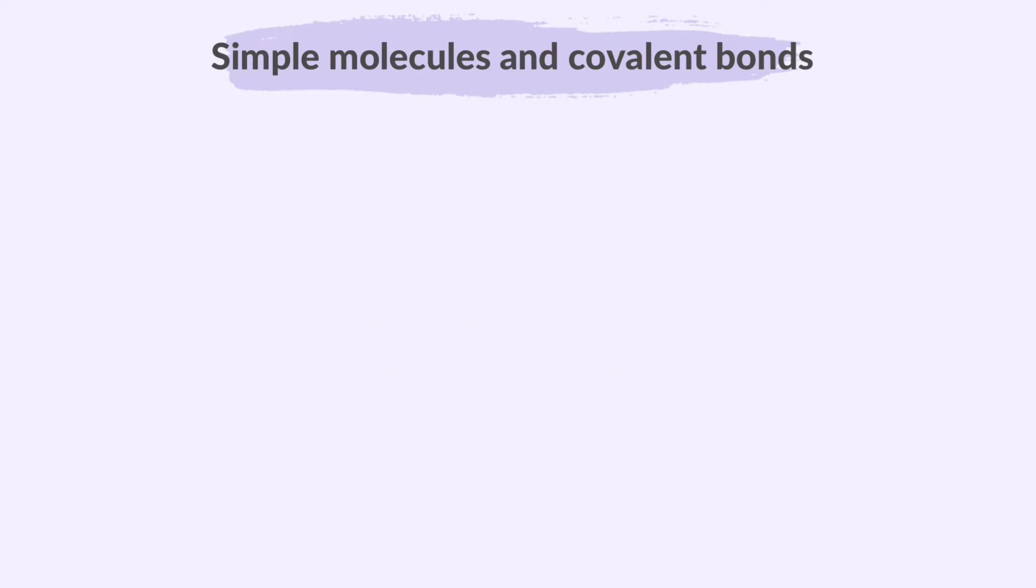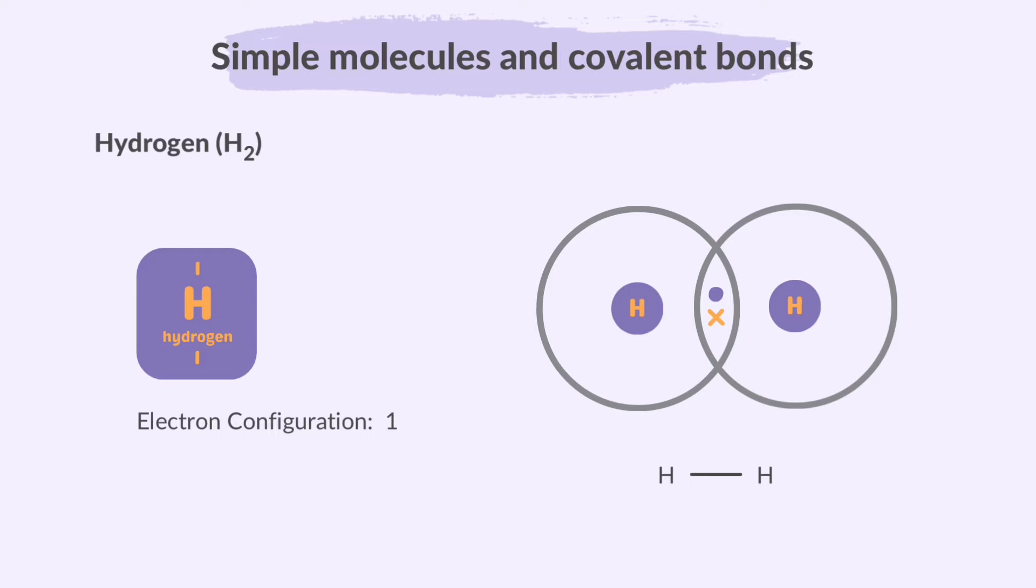Here are some examples of covalent bonds in simple molecules. Hydrogen, or H2. Each hydrogen atom has one electron in its outer shell. In a hydrogen covalent bond, two hydrogen atoms share electrons to form a stable molecule, H2. This sharing creates a single covalent bond that holds them together.